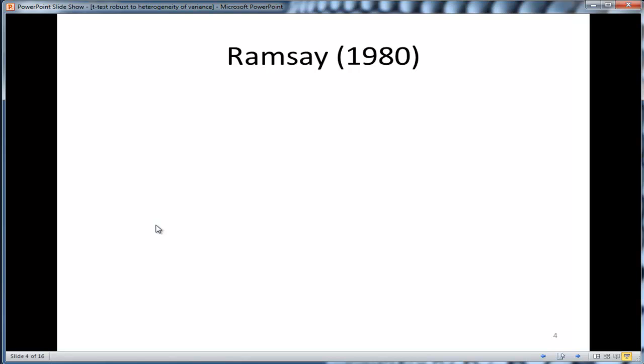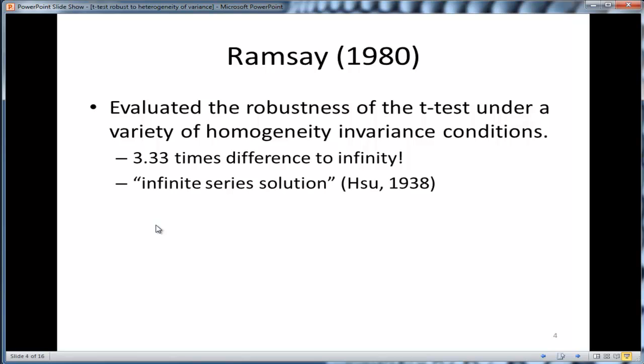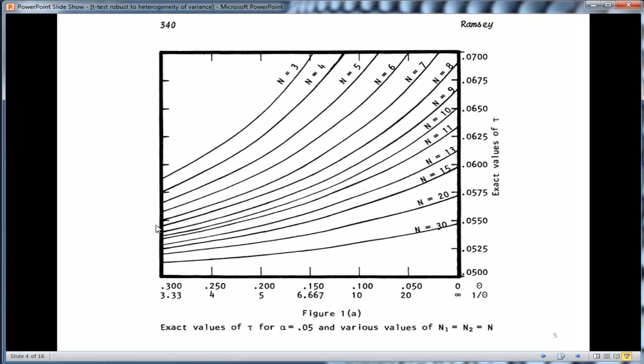Ramsey did a Monte Carlo simulation of sorts to examine the question and evaluated the robustness of the t-test under a variety of homogeneity in variance conditions. His lowest level, at least that was reported, was a difference of 3.33 times between the smallest variance and the largest variance, and he went all the way up to infinity through an infinite series solution published in 1938. He looked at sample sizes equal to 3 to 30, so not very big sample sizes. The robustness tends to increase with sample size, so we're particularly interested in the smaller sample sizes.